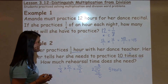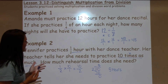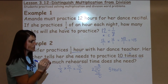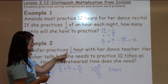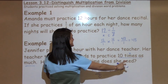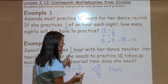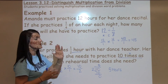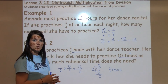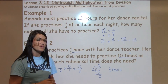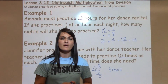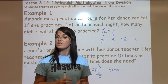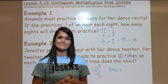Does that make sense? It does, because a half an hour — if we think about half-hour chunks — if her teacher wanted her to practice 10 times as much, 5 hours makes sense, because 2 half hours would make 1 hour. If you have any questions about 3.12 and distinguishing between multiplication and division in word problems, make sure to see your math teacher.